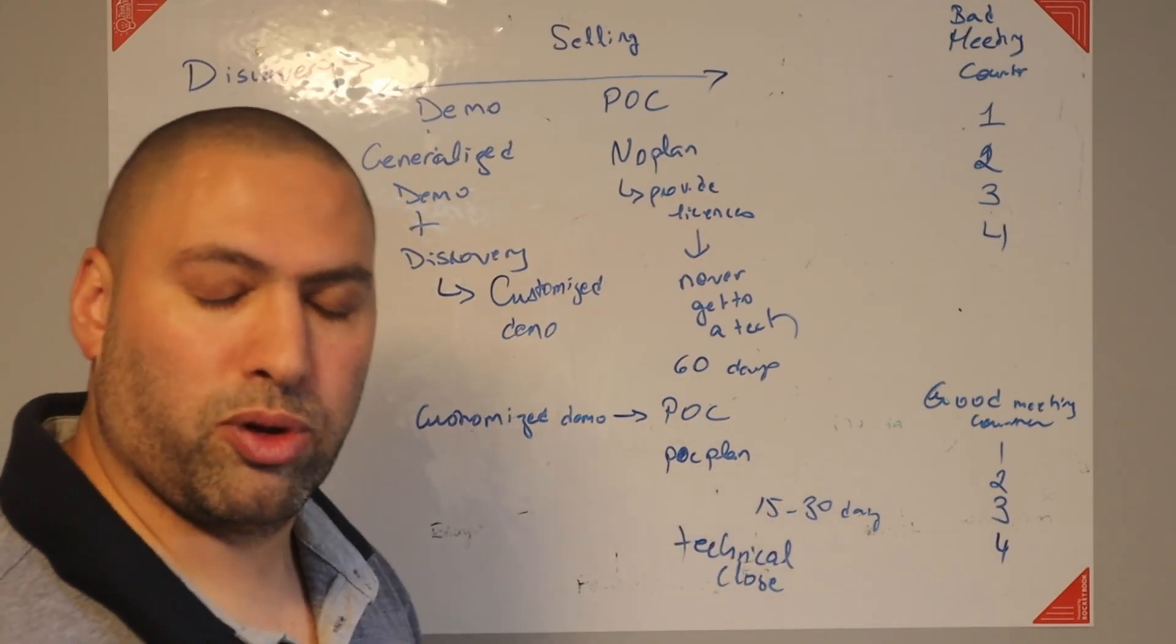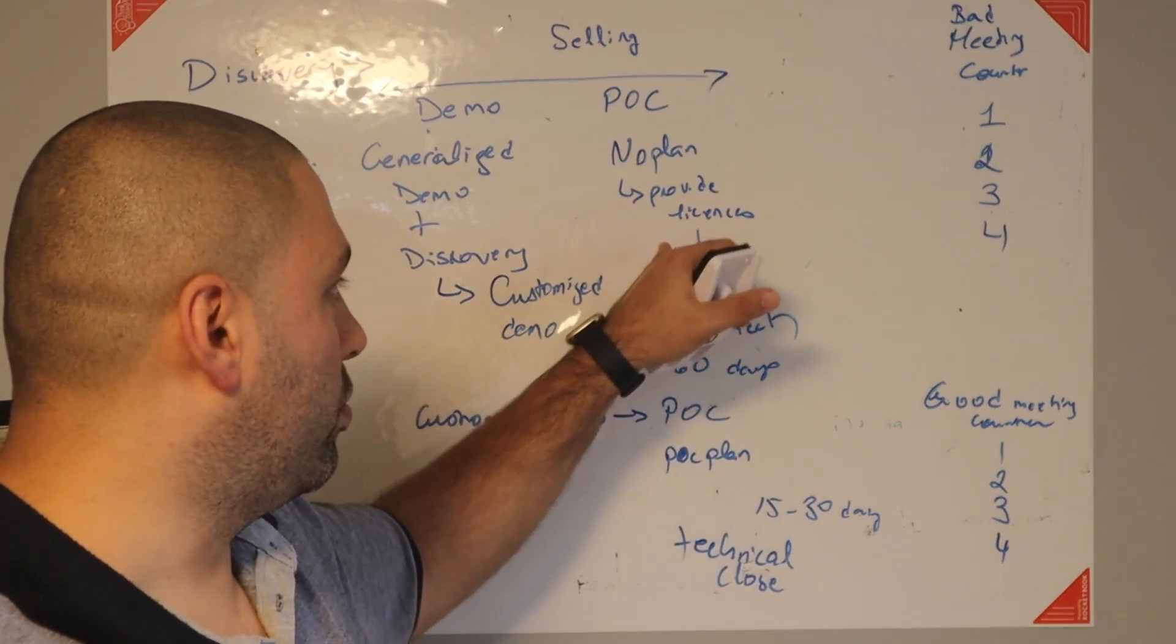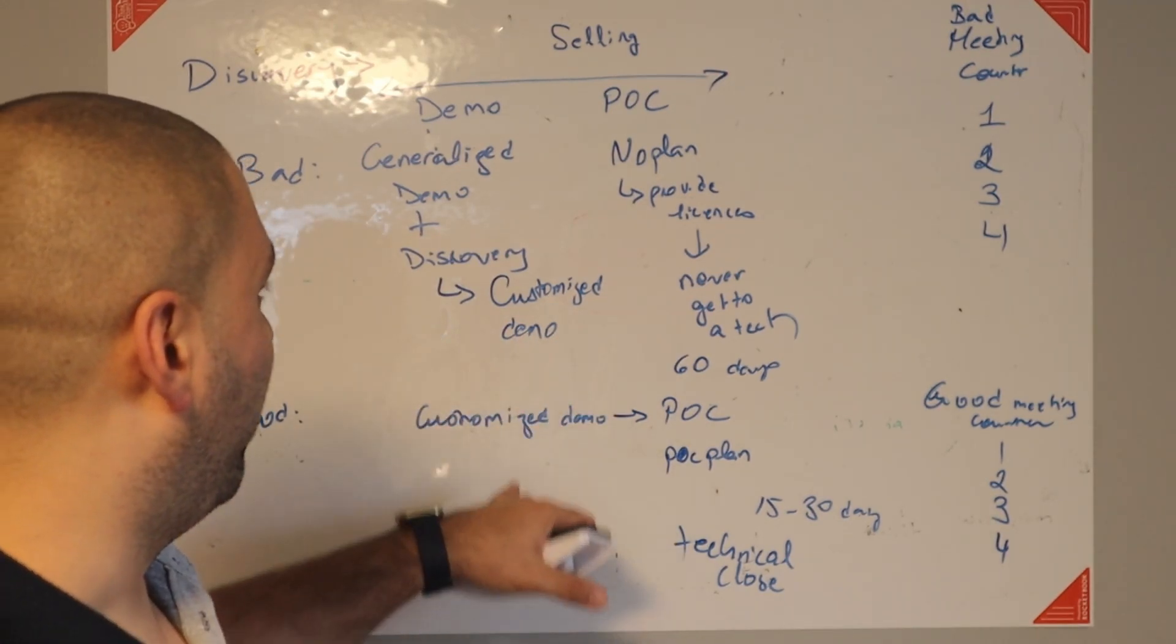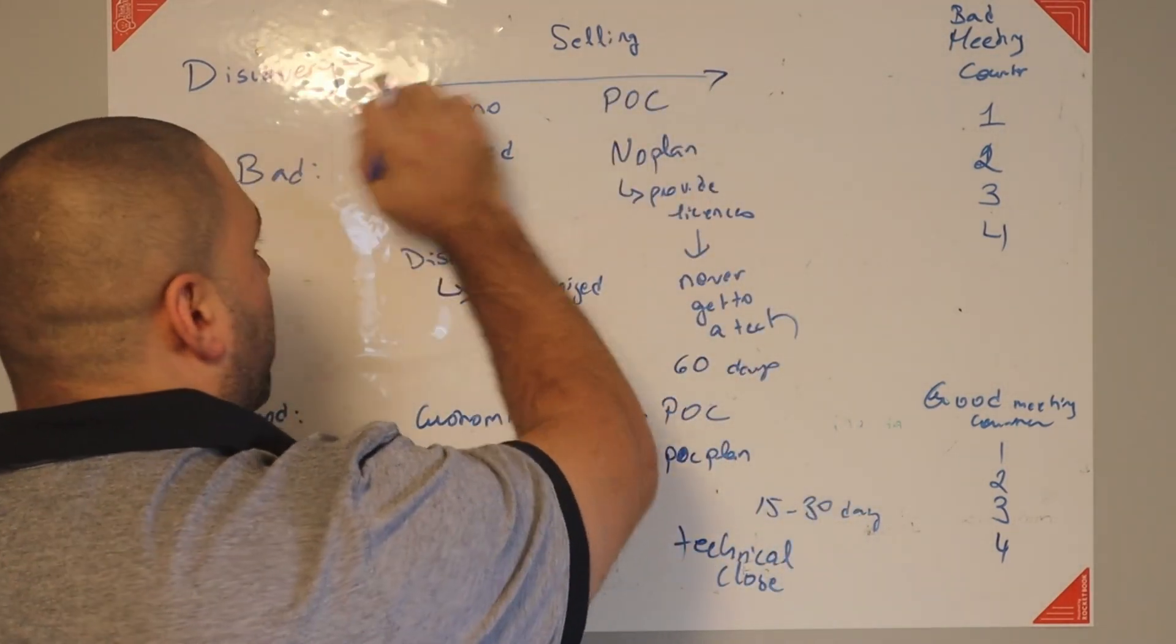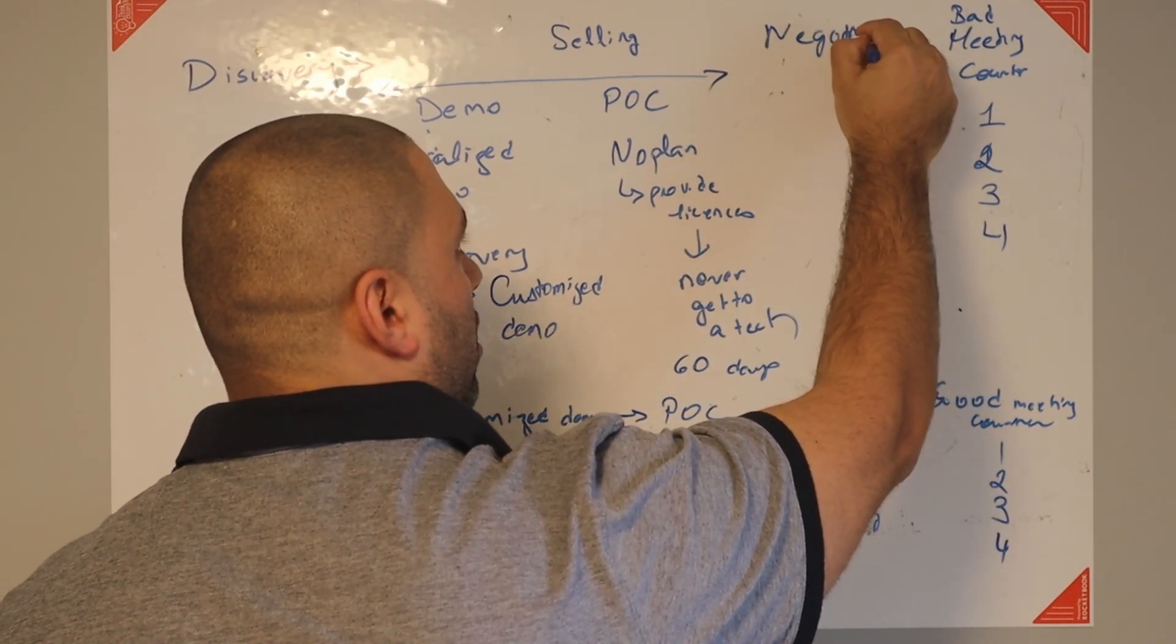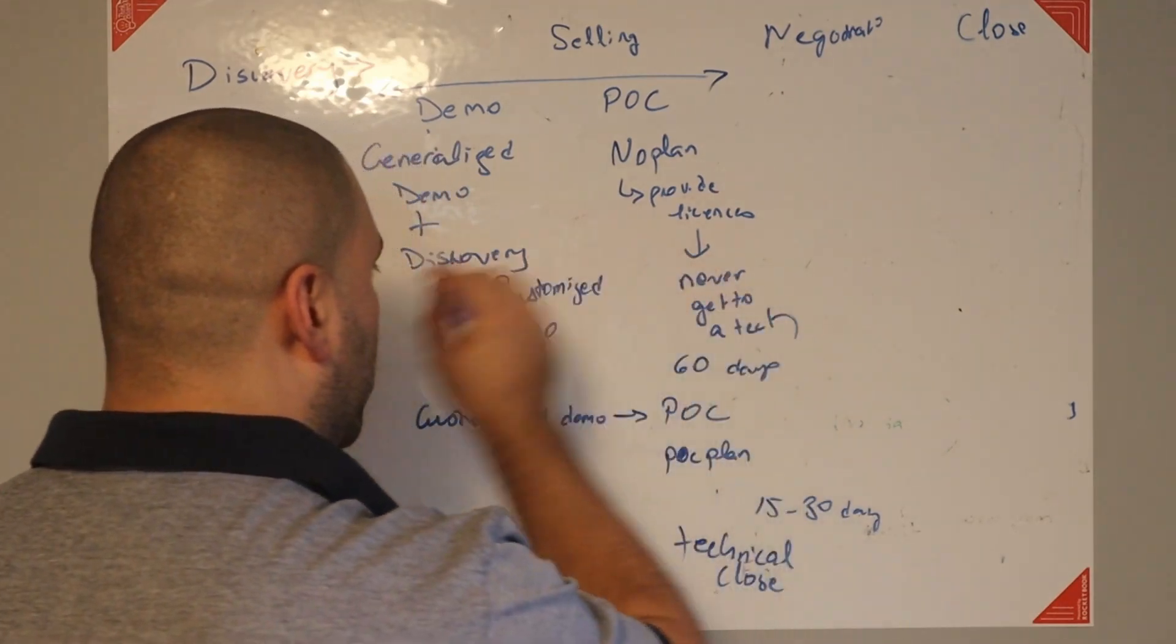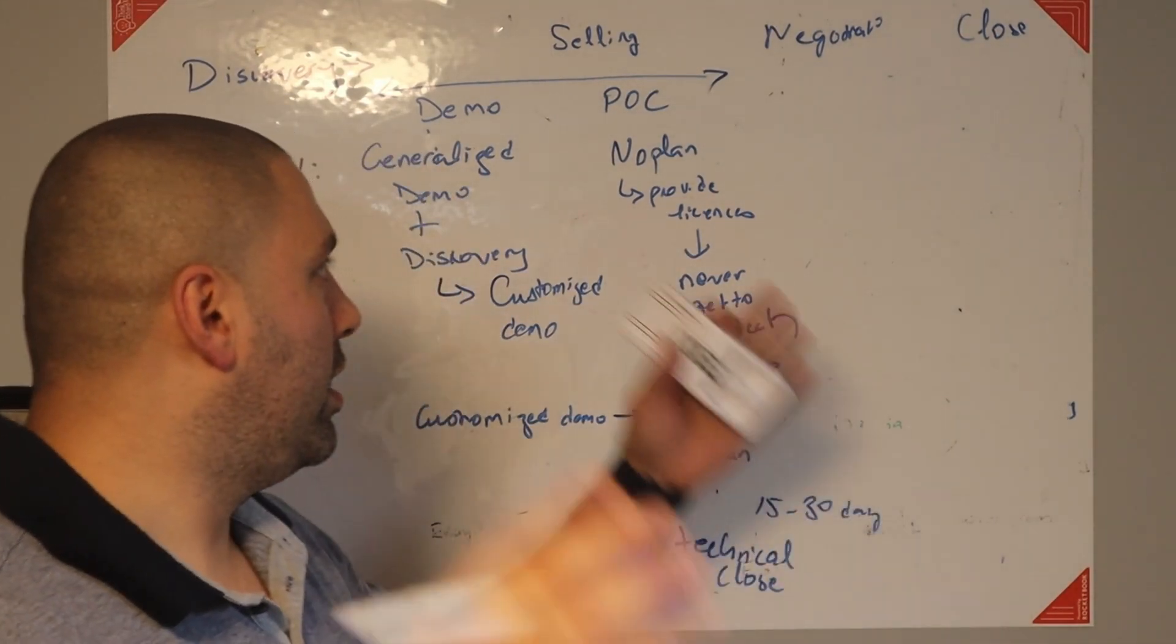And then, if you show value through all this, of your product, the negotiation part. So we have discovery, selling and then you have negotiation and close. This changes from book to book or whatever. Negotiation and close. If you did a good job showing value here, negotiation is much easier and you can close the deal faster here. That's it.